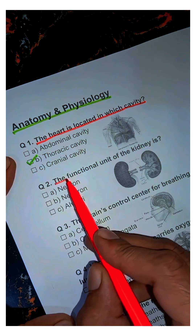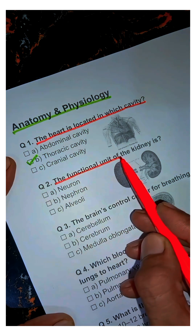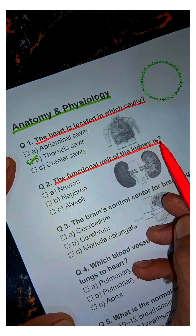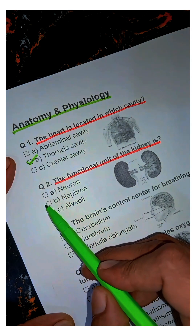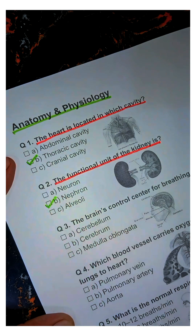Question 2. The functional unit of the kidney is? Answer: B. Nephron.